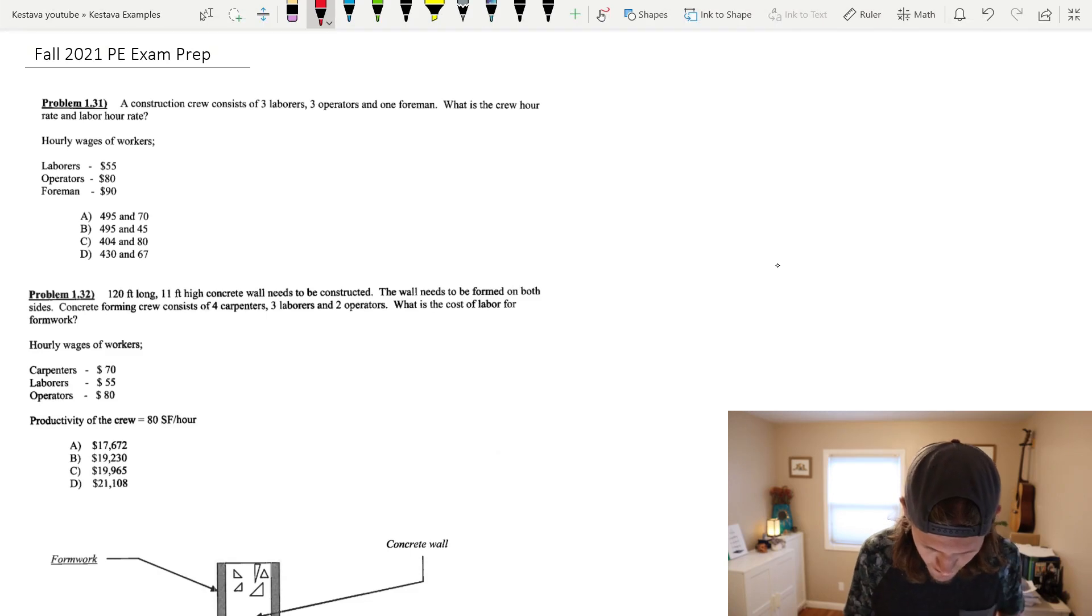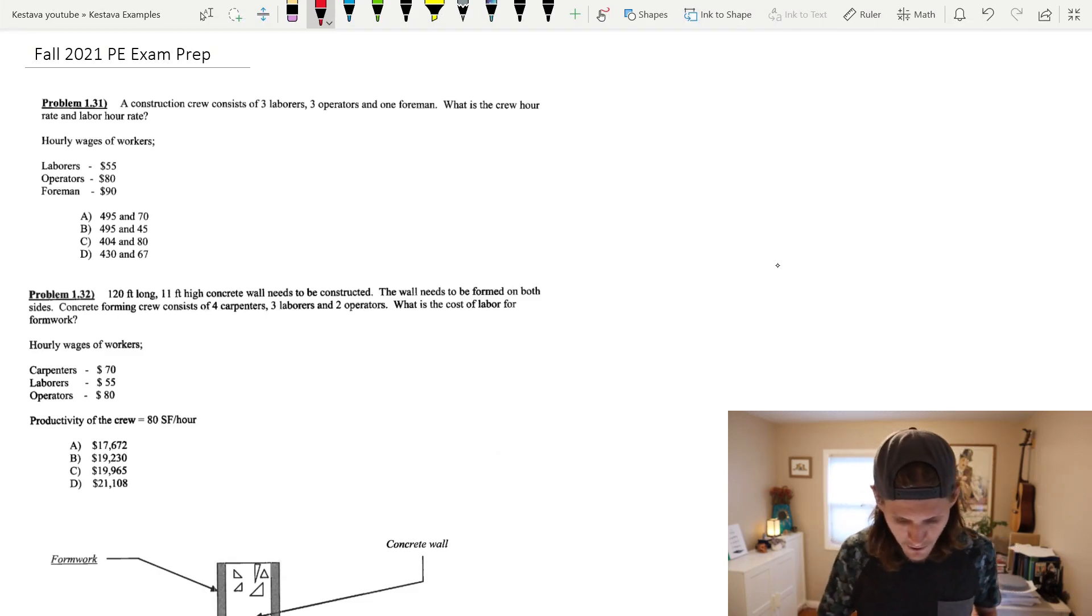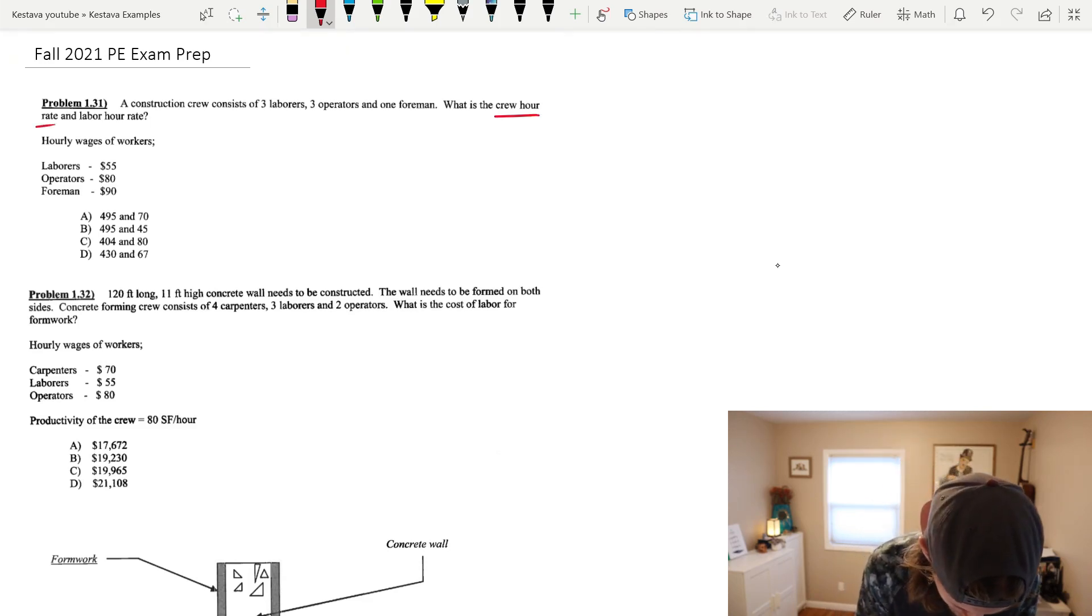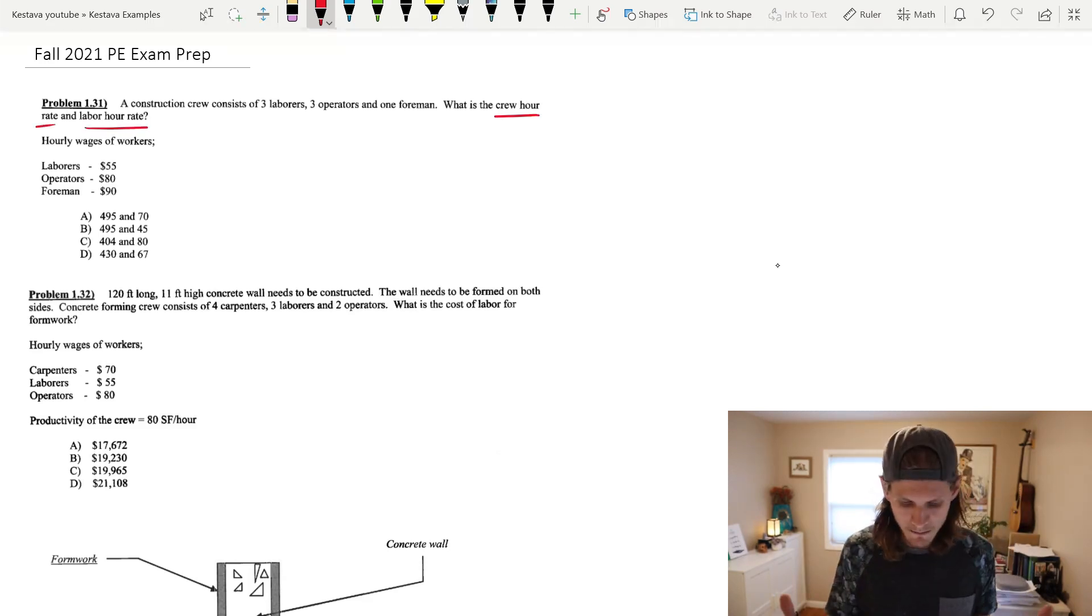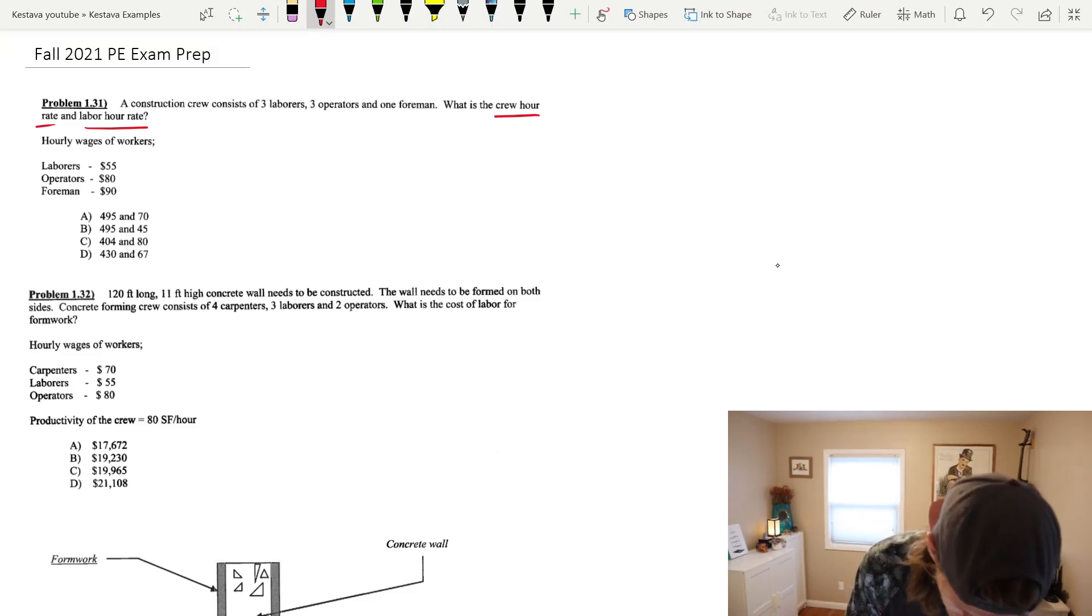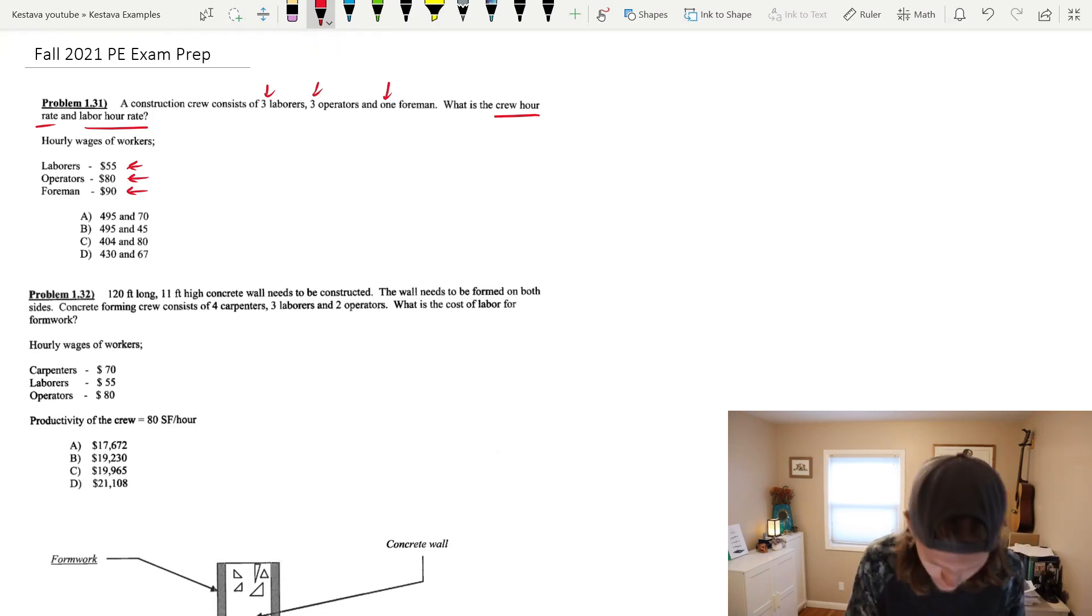A construction crew consists of three laborers, three operators, and one foreman. What is the crew hour rate and labor hour rate? So we always underline crew hour rate and labor hour rate. So the way that I'm going to break this down is you have a number of different types of construction workers. You have laborers, operators, and a foreman. Each of them cost a different salary per hour. So first of all, let's get a lump sum of how much they cost as a combined crew per hour.